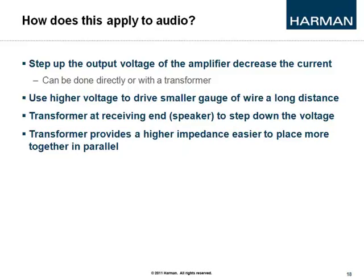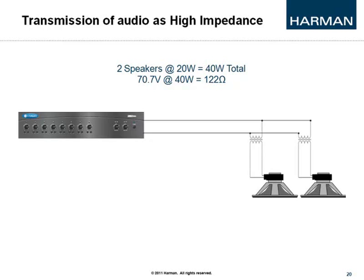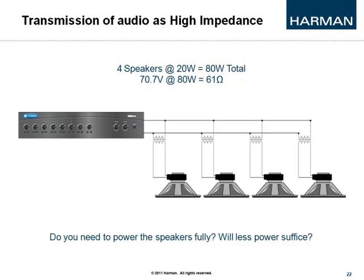This allows use of higher voltage to drive a smaller gauge of wire over longer distances with less loss, but it requires a transformer at the speaker to step the signal back down to the proper level. The transformer also presents a higher impedance back to the amplifier, so you can parallel more speakers together — potentially thousands if needed. For example, on a 70.7-volt system at a 20-watt tap per speaker, one speaker presents a 245-ohm load; two speakers drop to 122 ohms; three to 82 ohms; four to 61 ohms — but the total power of 80 watts remains evenly distributed.